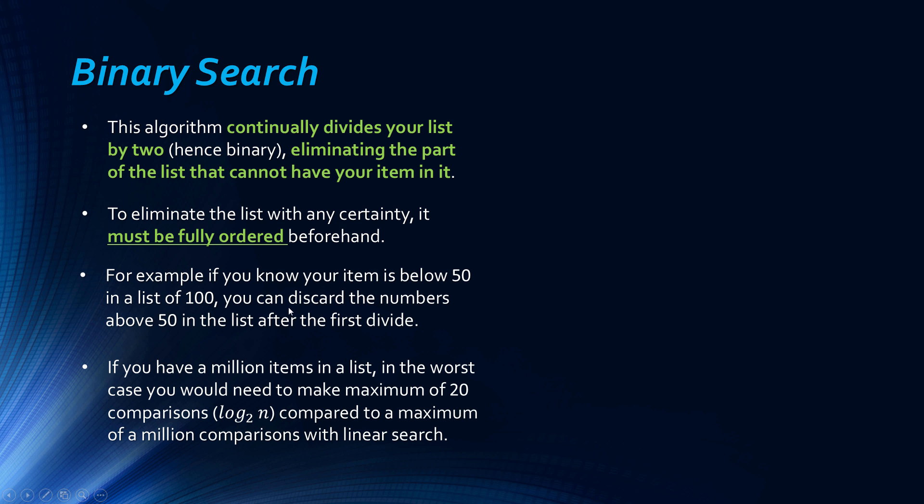There's no reason you'd use it if it's ordered. But binary search needs to be fully ordered as we'll look at the reasons in a second. So just an example, but we'll look at a better one in a second. So the reason why it's so much better than linear search is, if for example you had a million items in a list, in the worst case, the very worst case for binary search, it could be a lot quicker than this, you're going to have to make a maximum of 20 comparisons compared to a maximum of a million comparisons for linear search.